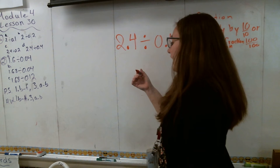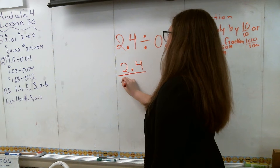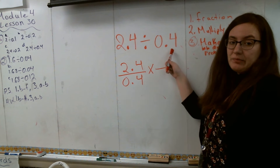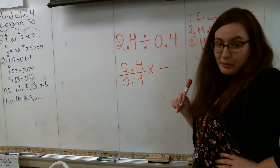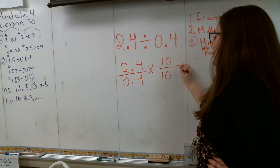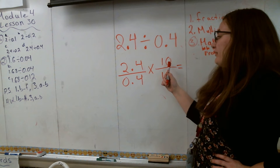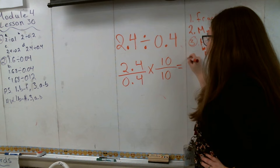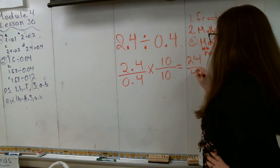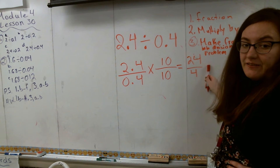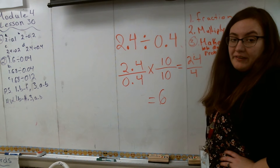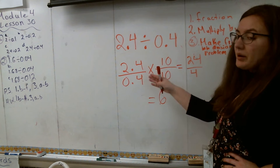For 2.4 divided by 0.4, I rewrite as a fraction: 2.4 over 0.4. I multiply by 10 over 10 because the 4 is in the tenths place. So 2.4 times 10 gives 24, and 0.4 times 10 gives 4. Now I have the fraction 24 over 4, and thinking of it as a division problem: 24 divided by 4 is 6. That is my final answer. Pretty easy process — you're just putting all the skills you've learned so far together.